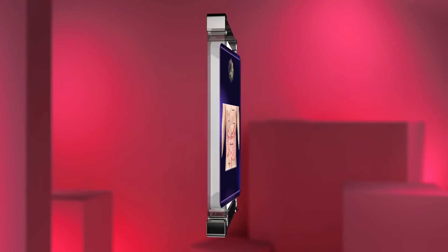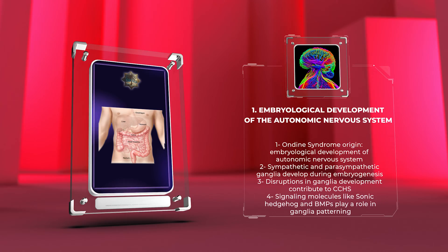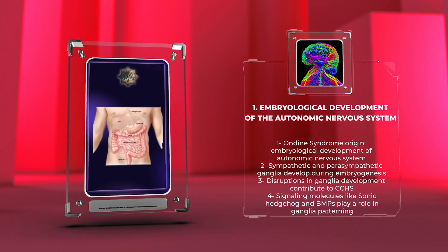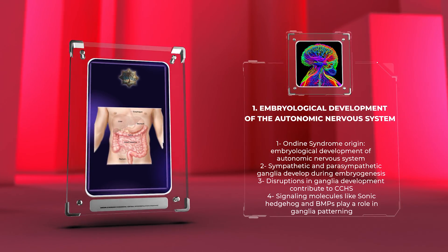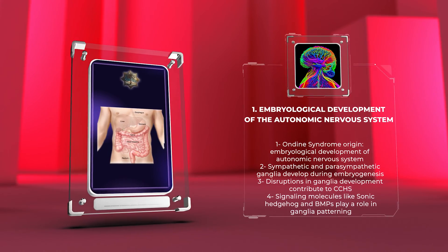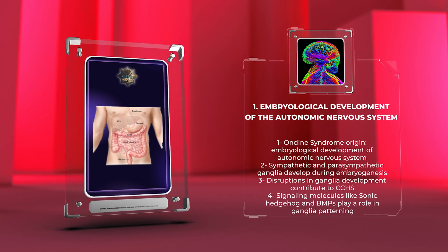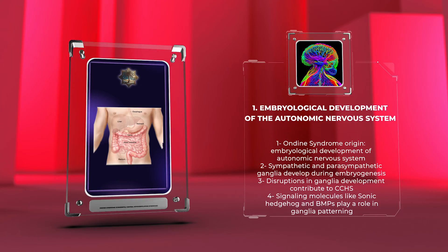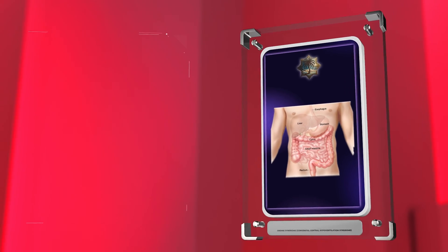To comprehend the origins of Ondine syndrome, we first need to understand the embryological development of the autonomic nervous system. During embryogenesis, neural crest cells migrate and differentiate into the sympathetic and parasympathetic ganglia. The sympathetic ganglia develop in a chain-like fashion alongside the vertebral column, while the parasympathetic ganglia originate from cranial nerves 3, 7, 9, and X, as well as the pelvic splanchnic nerves.